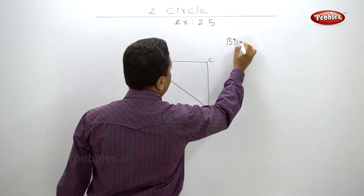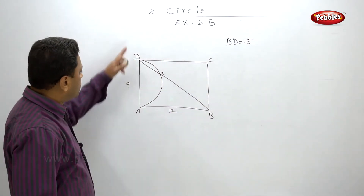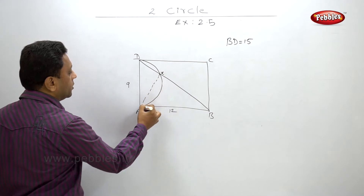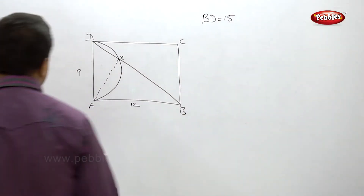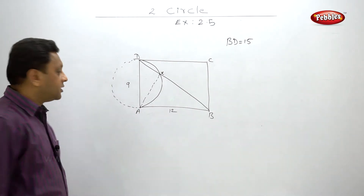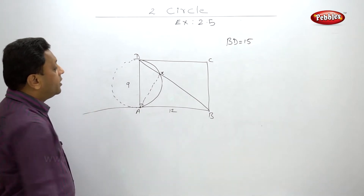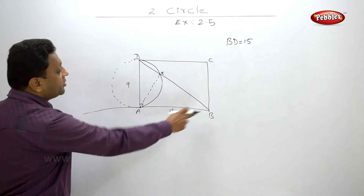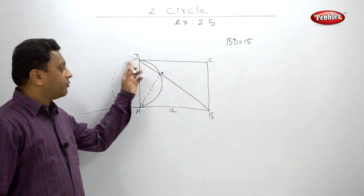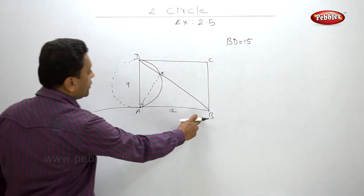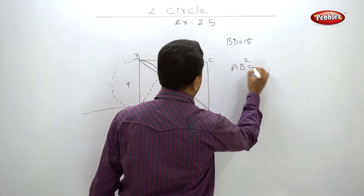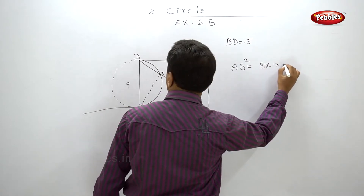BD is 15. This is a diameter and I got one point on the semicircle, so I will connect that point. If I complete the circle — since this is a rectangle, this is 90 degrees — that means AB is a tangent to the circle and BD is the secant. Using the intersecting secant property where one is tangent and one is intersecting: BX into BD is equal to BA squared.